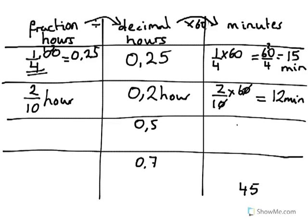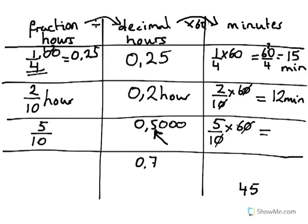When we have a decimal number of hours, to convert decimals back into fractions, we look at how many tenths we have. We have 5 tenths. We look at the last number after the decimal point. We want to know what 5 tenths is in minutes, so we multiply the fraction 5 tenths by 60. The zeros cancel, and 5 sixes are 30. So half an hour equals 0.5 of an hour equals 30 minutes.